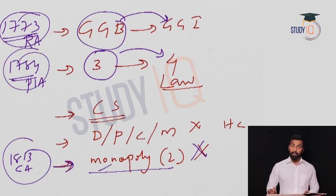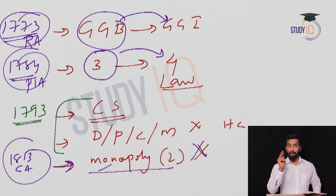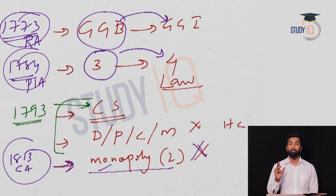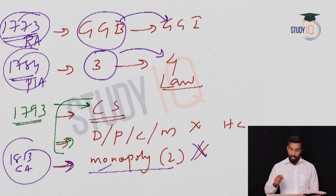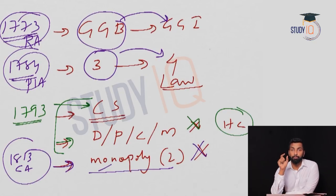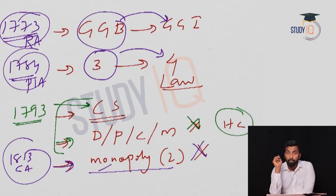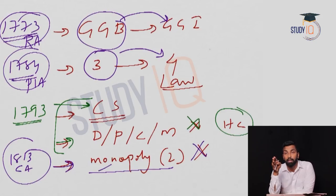Continuing the recap: the civil service reform changed no-discrimination rules from Cornwallis's 1793 system, and the judicial reform replaced the four Diwani courts with High Courts. This is how you can remember the 1833 Charter Act easily. The provisions are: Governor-General of Bengal became Governor-General of India; three members became four with a Law Member; no discrimination in civil service recruitment; Diwani courts abolished and High Courts set up; and the two surviving monopolies from 1813 also ended.